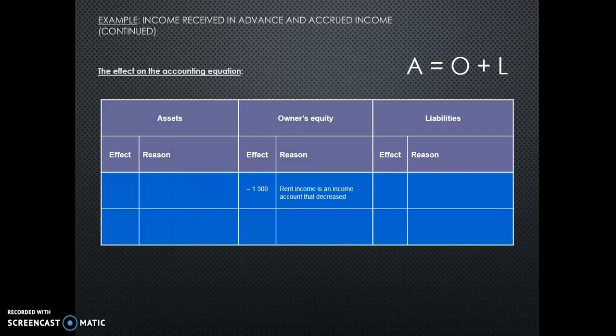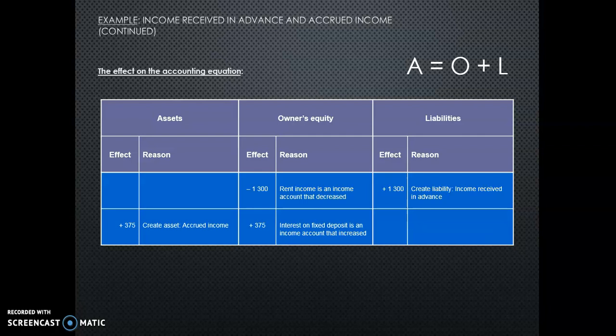If you look at the accounting equation: rent income is an income that is decreasing. An income normally increases owner's equity. If an income decreases, it decreases owner's equity. Income received in advance is a liability because I still owe them that income — I have received it in advance, so it is still owed to the other person. For accrued income, we create an asset — we are owed that amount. Then interest on fixed deposit is an income account that is increasing, which also increases owner's equity. Make sure you understand the effect on the accounting equation.